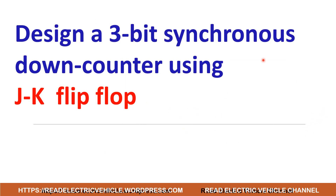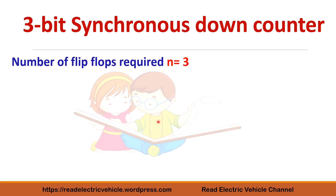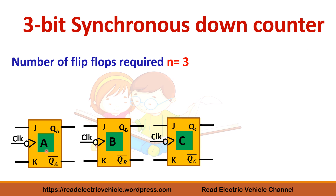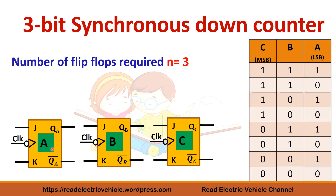Let's start to design a 3-bit synchronous down counter using JK flip-flop — it is very easy and very similar to the up counter. We take 3 flip-flops: A, B, and C. When writing the table, the LSB is placed first and the MSB last, but when drawing the logic diagram, LSB comes first and MSB last. The table goes 7, 6, 5, 4, 3, 2, 1, 0 — so for a down counter the table is in reverse order.